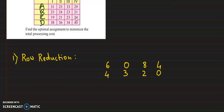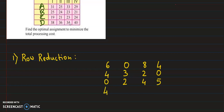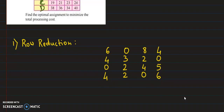In the third row, the smallest value is 19. Subtracting 19: 19 minus 19 is 0, 21 minus 19 is 2, 23 minus 19 is 4, and 24 minus 19 is 5. In the last row, the smallest value is 34. Subtracting 34: 38 minus 34 is 4, 36 minus 34 is 2, 34 minus 34 is 0, and 40 minus 34 is 6. This is our row reduction matrix.